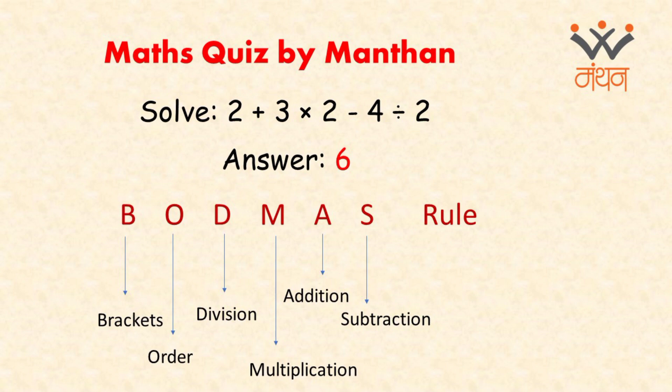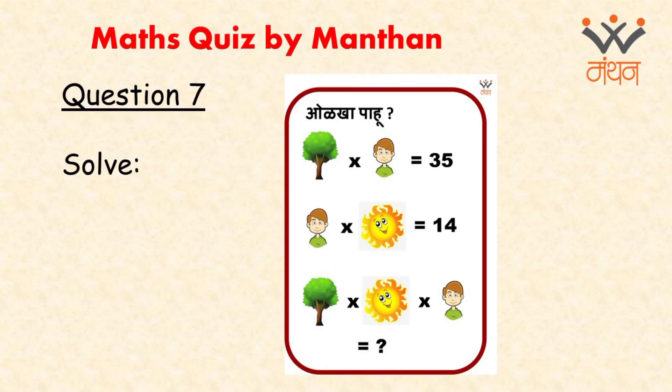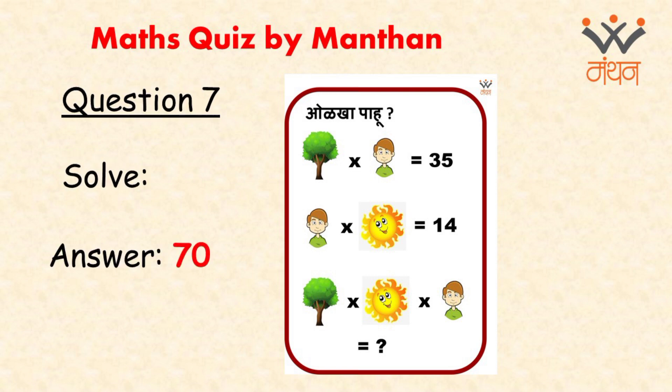Our next question is a picture puzzle in which you have to find out the value of 3 multiplied by sun multiplied by boy. The answer is 70. The puzzle looks quite simple to solve but it includes many concepts like factorization, multiplication, tables, and so on. You can also form difficult puzzles like this and send them to us on Manthan's number.